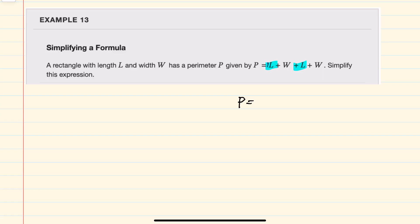we have one L being added to another L. Combining would give us two L. And similarly for the Ws, those are also like terms. We have a single W plus another single W combined would be plus 2W.